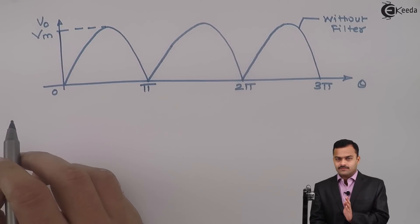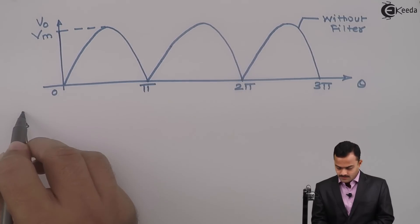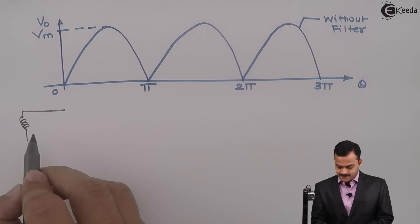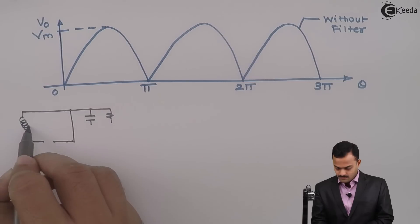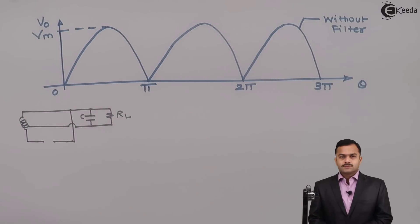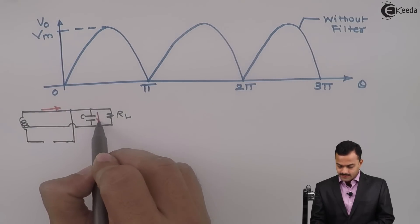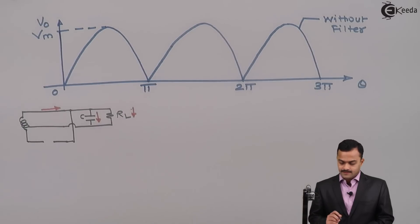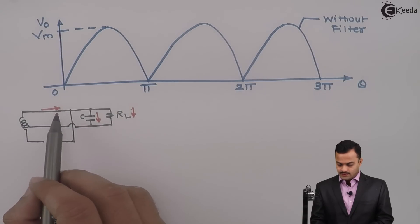Starting from the secondary of the transformer, diode D1 conducts but D2 is reverse biased. There will be a current flowing through diode D1 in this direction and you will get current flowing through C as well as RL. What happens is that capacitor C charges through diode D1.